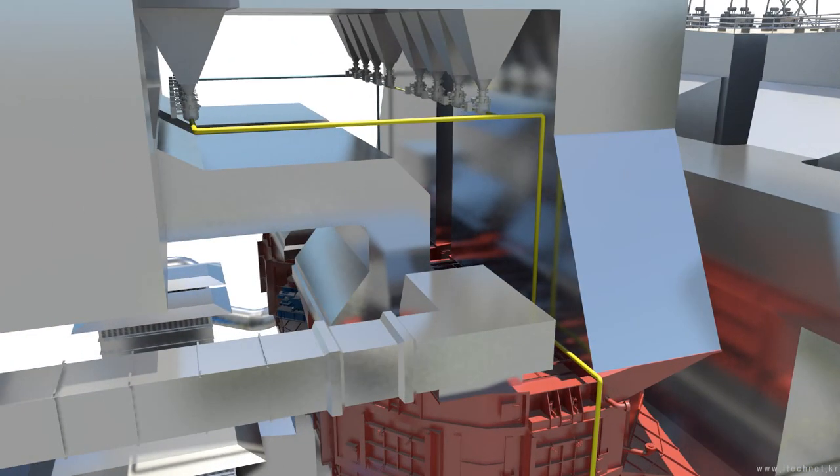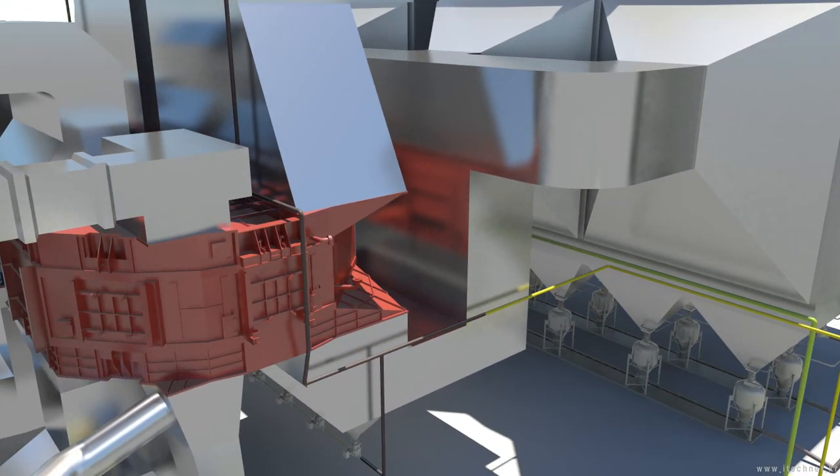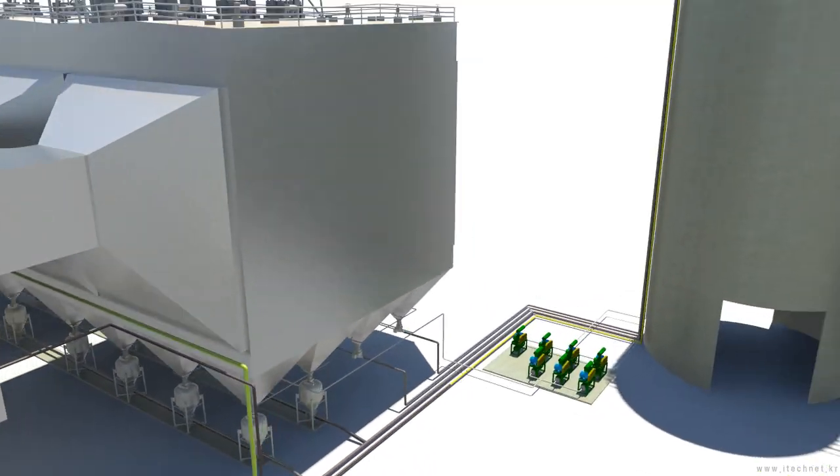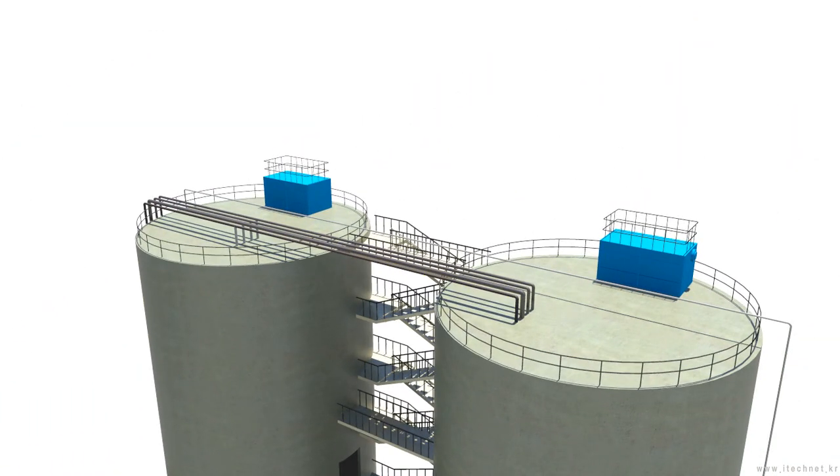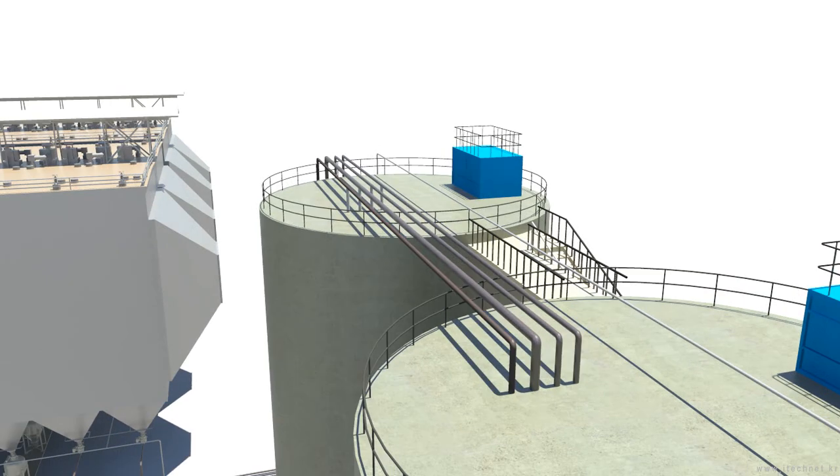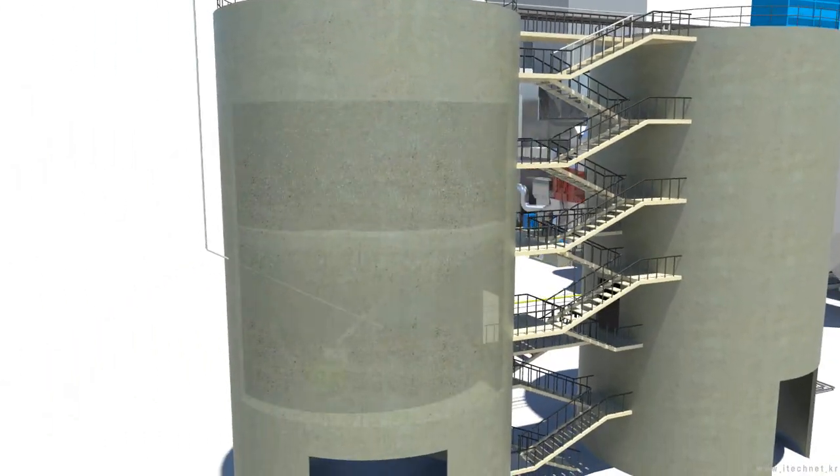The economizer ash and air preheater ash are sent to the ash silo using compressed air. The ash transferred from every system is stored at the ash silo.